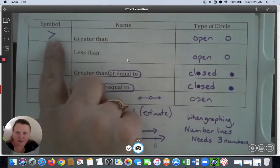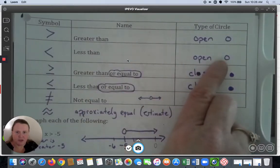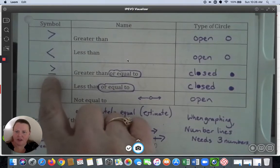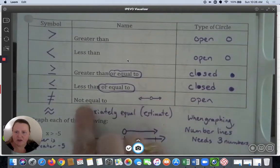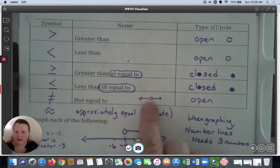This is the greater than symbol, this is the less than symbol, and both would be graphed with an open circle. If it includes equal to, that will have the line underneath it, and those will be closed circles when graphing. We also have a symbol called not equal to, which we can graph as well.